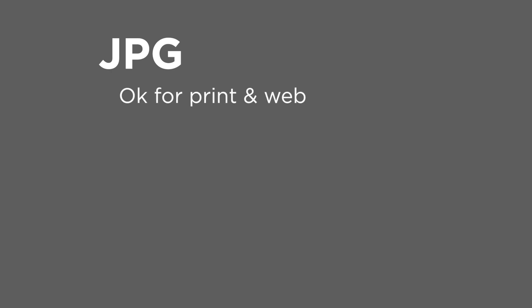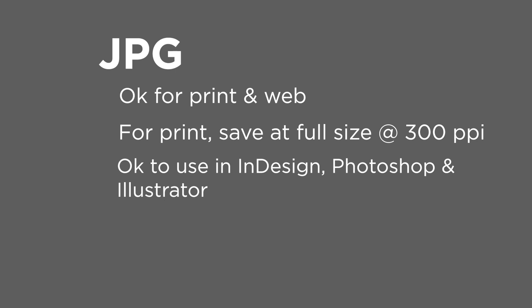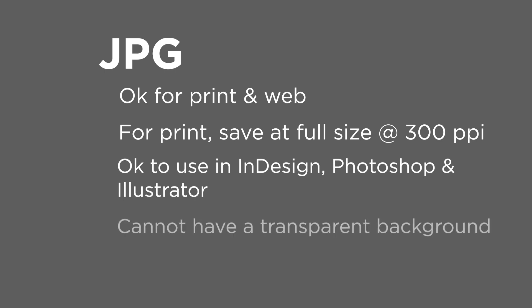JPEG can be used for both print and web. For print, you need to save it at full size at 300 DPI or PPI. If you're doing something as large as a billboard, talk to your printer, because often you don't need 300 PPI — it can be much smaller. You can use JPEGs in InDesign, Photoshop, and Illustrator, though it won't be a vector file even in Illustrator. Almost all images on the web are either JPEG or PNG. Note that a JPEG cannot have a transparent background — wherever it looks transparent, it will turn to white.